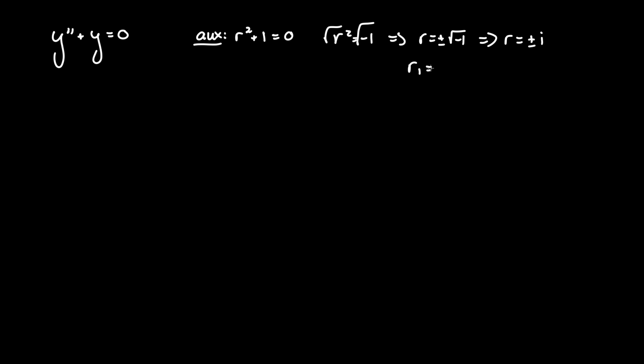This means that r1 equals negative i and r2 equals positive i. In the case that r has a complex component we put it in general form r equals alpha plus minus beta i, where alpha is the real component and beta is the coefficient of the non-real component.